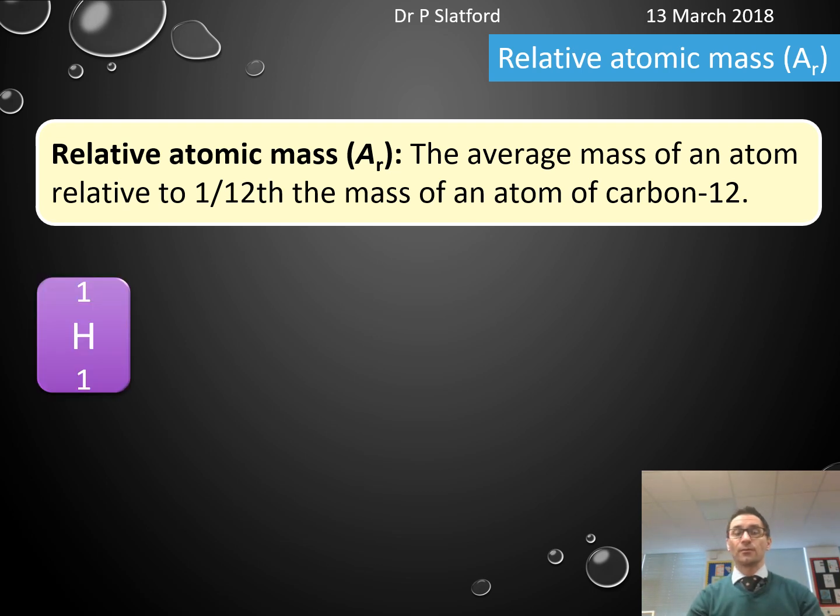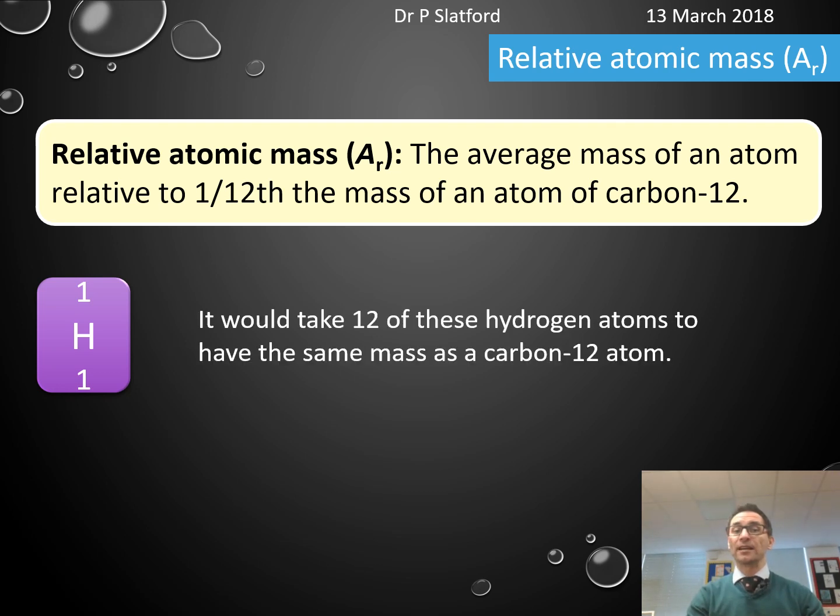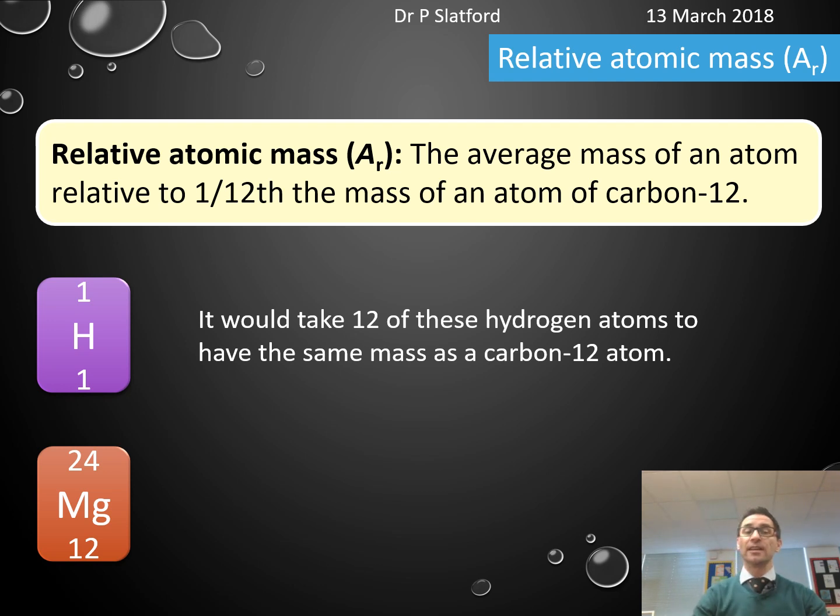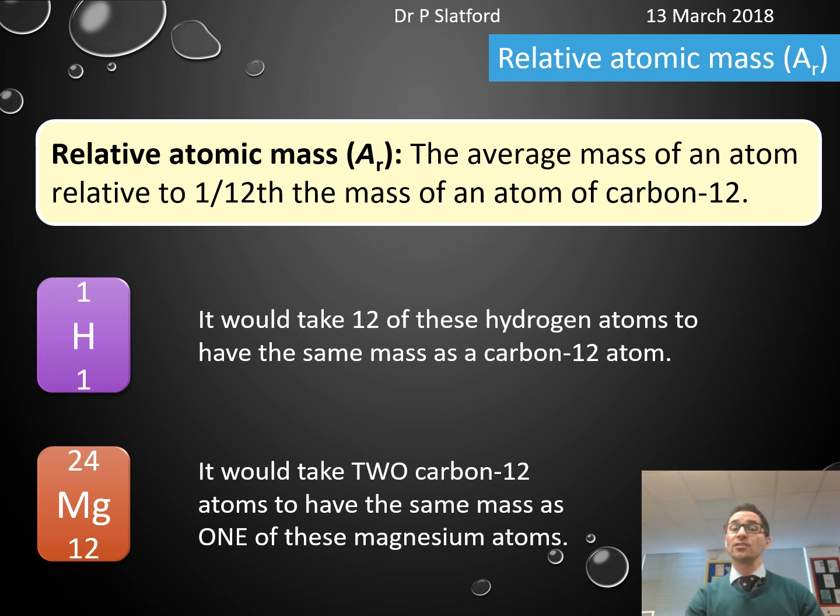Well, if we take hydrogen, we have an atomic mass of 1. But what that actually means is it's 1/12th of the mass of a carbon-12 atom, and it would take 12 hydrogen atoms to have the same mass as a carbon-12 atom. If we take magnesium, where its atomic mass is 24, well actually it has twice the mass of a carbon-12 atom, and it would actually take two carbon-12 atoms to have the same mass as one magnesium atom.